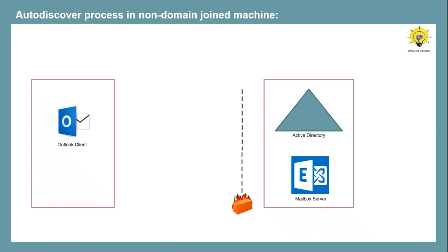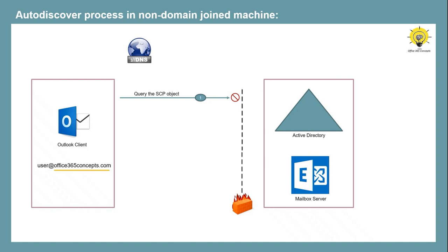If a user tries to configure his profile from the external network or from a non-domain-joined machine, the first lookup — the SCP lookup — will fail because the client is using the external network. Then Outlook will try to locate the Autodiscover service using DNS. Outlook will use the domain suffix from the email address of the user — for example, if the user's email address is user@office365concepts.com, Outlook will extract office365concepts.com and will reach DNS using two predefined URLs. The first URL, https://domain.com/autodiscover/autodiscover.xml, will fail because no CNAME record or Autodiscover record has been published with just the domain name.